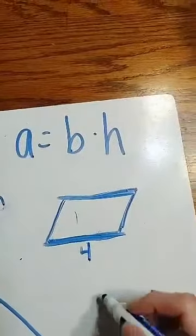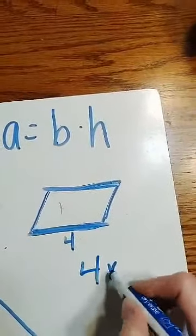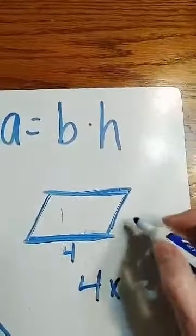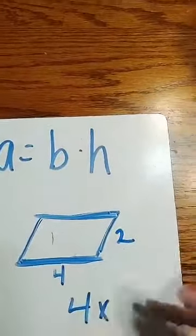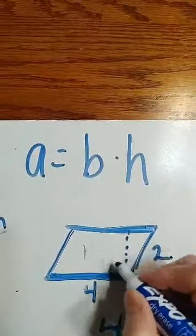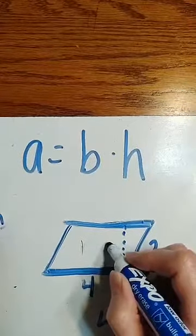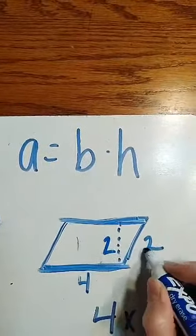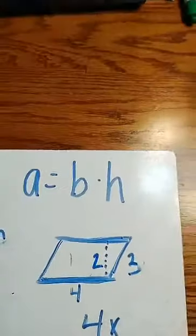So if this is 4, I found my base so I could take 4 times my height. Now we have to decide: is this the height of this slanty or is my height this? I'm going to change these. There we go.